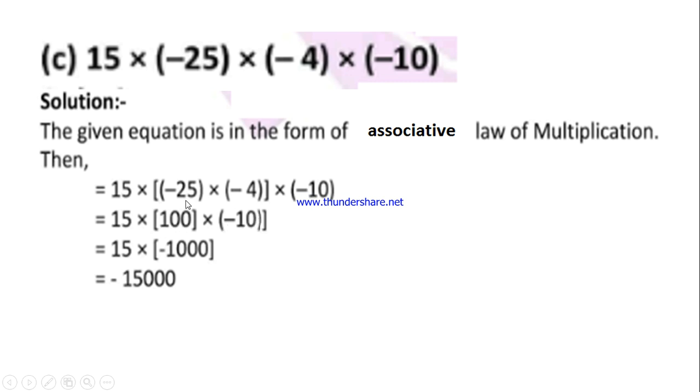So first integer 15 ×, then we group the second entire value. Positive × negative = negative, 100 × 10 = 1000. So we placed it in brackets here because it is -1000.